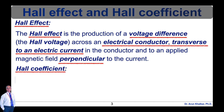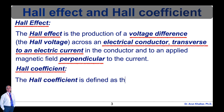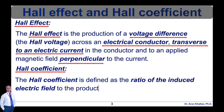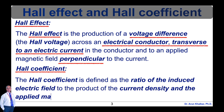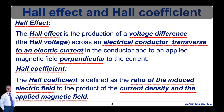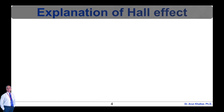The Hall coefficient is defined as the ratio of the induced electric field to the product of the current density and the applied magnetic field. It is a characteristic of the material from which the conductor is made, since its value depends on the type, number, and properties of charge carriers that constitute the current. The Hall effect is due to the nature of the current in a conductor.